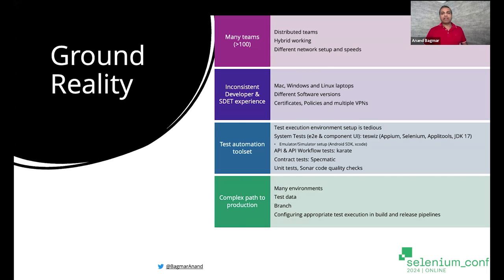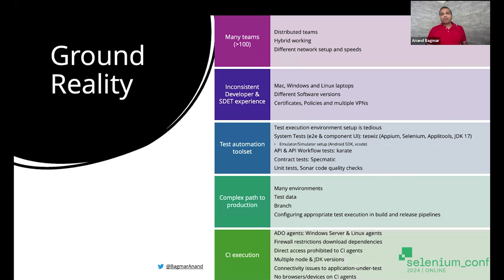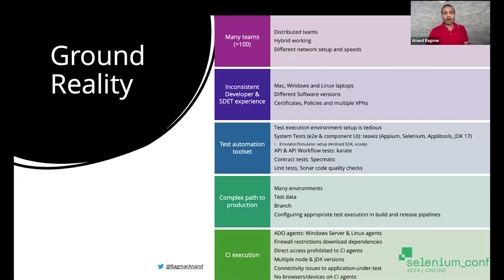That itself is very complex, and given there are so many teams and products, each team and each product can potentially have a different path to production. The last bit in that reality check is CI execution. In this case, the customer uses Azure DevOps, and the Azure DevOps agents could be Windows servers or Linux agents. These agents have firewall restrictions and different network policies because they connect to internal environments. You cannot access the CI agents directly — there's no direct access.